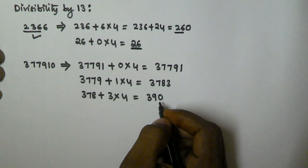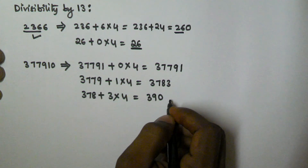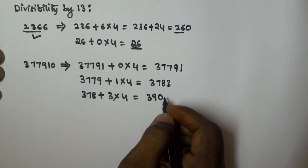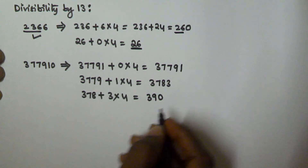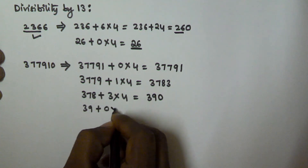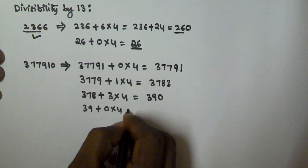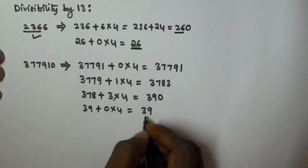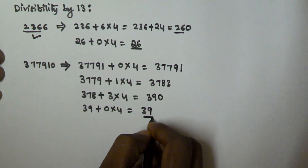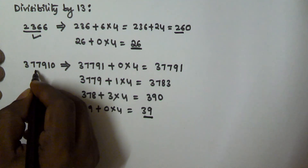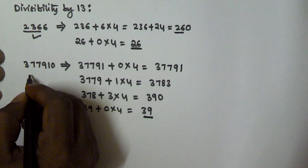We still do not know if 390 is divisible by 13, but we can see it is. To confirm, we repeat: 39 plus 0 times 4 equals 39. We know that 39 is divisible by 13, so the given number 377910 is also divisible by 13.